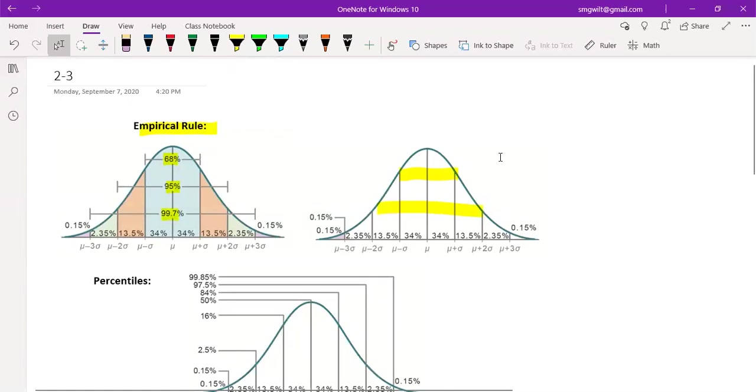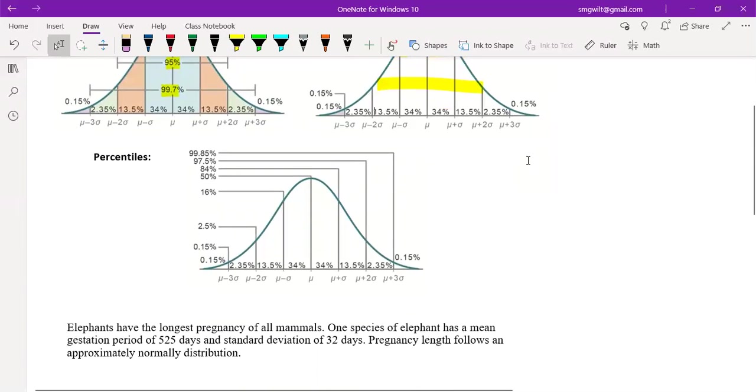The next thing they talked about was percentiles. To get the percentiles, they literally just added the values together. So 0.15% is obvious, it's just that one. Then they added 0.15 plus 2.35 to get two and a half. Then they added 13 and a half to that to get 16. We talked about the mean is 50%, then they added 34% and so on in order to get these values.